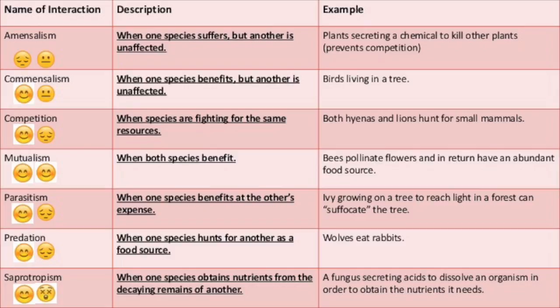With amensalism, one species suffers while another is unharmed. Commensalism: one species benefits while another is unharmed. Competition: one wins out over another — interspecific competition is between two or more species, and intraspecific competition is within one species. Mutualism: both species benefit. Parasitism: one species benefits at another's expense. Predation: one species benefits at another's expense but must actively seek this advantage. And saprotrophism: one species benefits off of the dead remains of another.